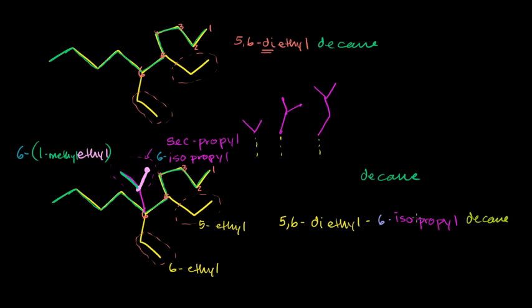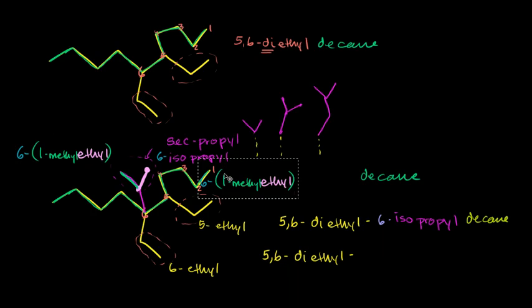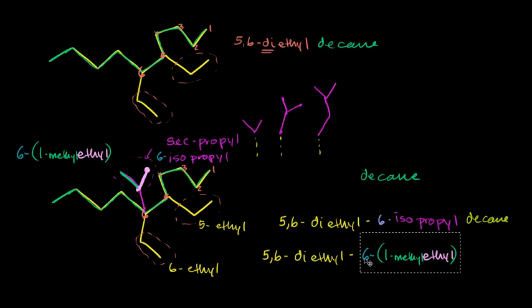This would be the common name for it. If we wanted to use a systematic name, we would replace the 6-isopropyl with 6-1-methyl-ethyl. So let me write that down. So let me just copy this part. So copy and paste right there. And then I can copy and paste this right here. Copy and paste. So it becomes 5-6-diethyl-6-1-methyl-ethyl. I know it's very confusing when you see it, but when you break it down, you really could, you would be able to draw this from this structure. And then finally, you finish with a decane.